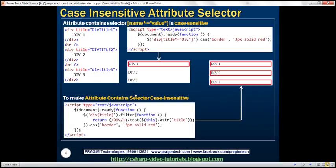Now let's look at another example — how to make the attribute contains selector case insensitive. The attribute contains selector syntax is name star equals value, which we discussed in detail in our previous video session. Again, we have three div elements, all of them have the title attribute, and all the attribute values contain the substring 'div'. The code is telling: find all div elements which have the title attribute and the value must contain the substring 'div'. But the casing is different across the elements, so we only get a red border around the first div element. Let's see how to make this attribute contains selector case insensitive.